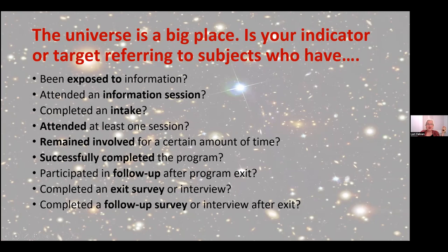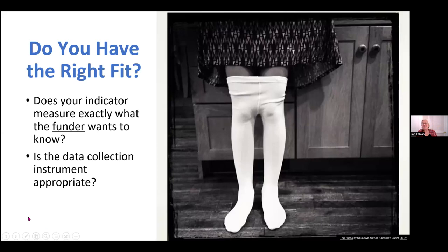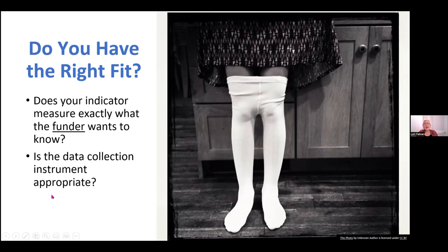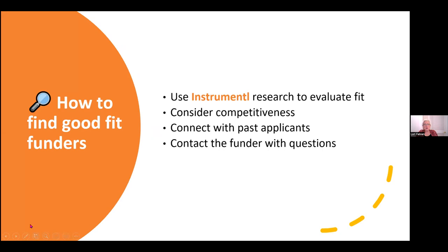Do you have the right fit? Does your indicator measure what the funder wants to know, or what you want to tell them? Ideally it should do both, but if you had to choose, make sure you can tell the funder what they need to know. Secondly, is your data collection instrument appropriate to the kind of performance indicator you're writing? There are two types of fit: one for the funder's needs, and one for the measurement instrument.